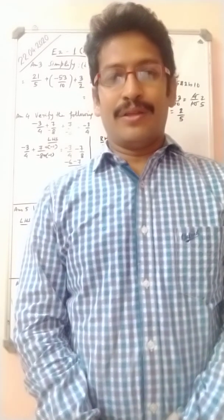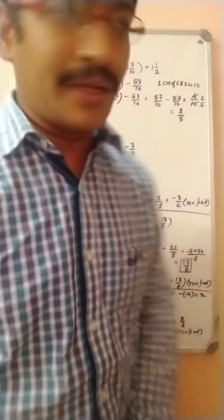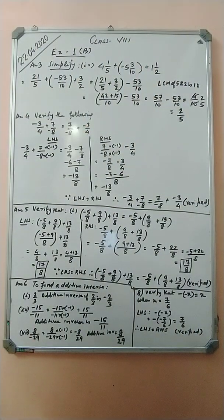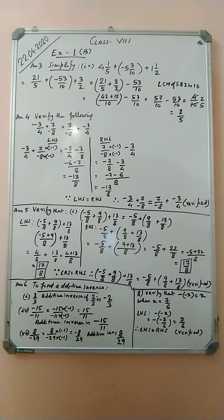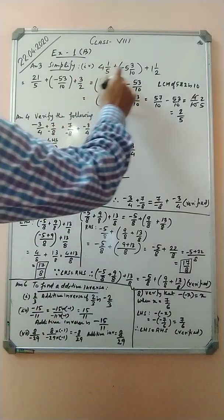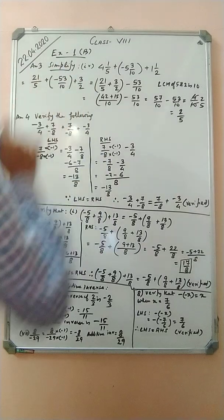Dear students, now we will be going through Exercise 1B, Question Number 3, Bit Number 4. The question is: 4 and 1/5 plus minus 5 and 3/10 plus 1 and 1/2. You have to simplify. These are all mixed fractions, so first we convert them into improper fractions.